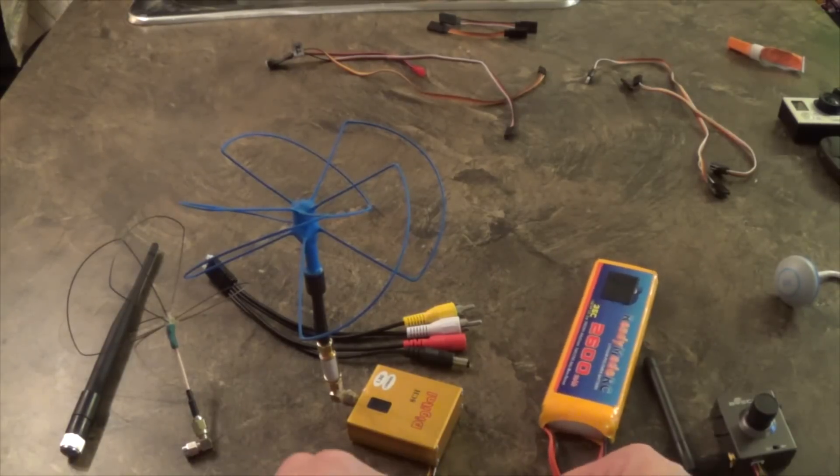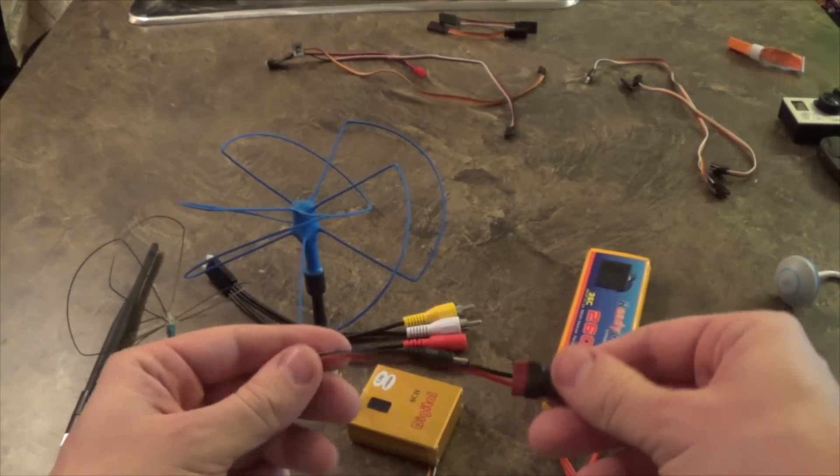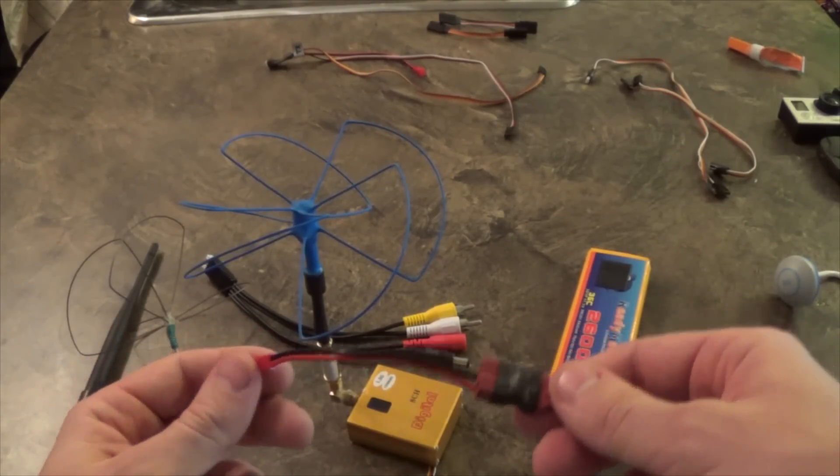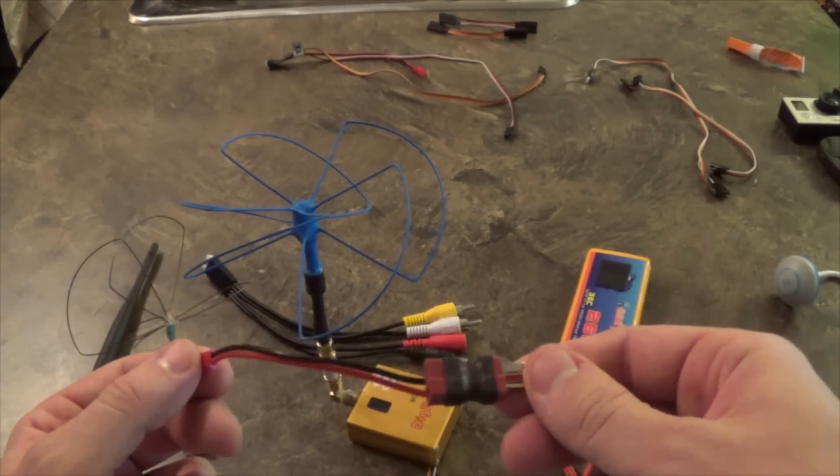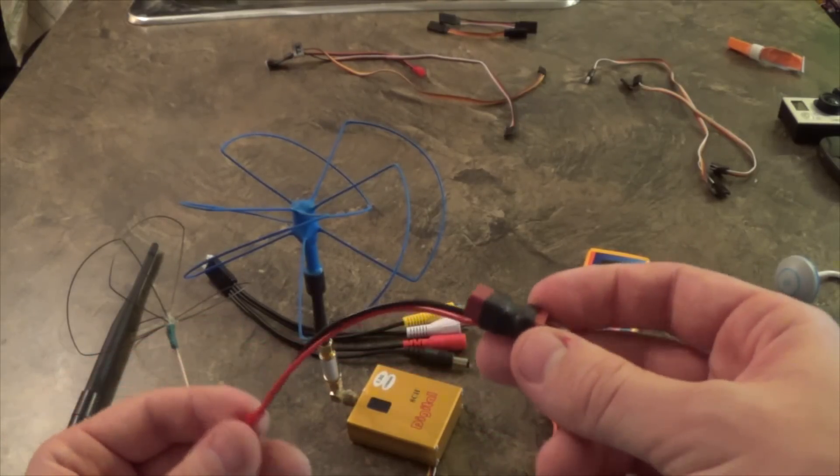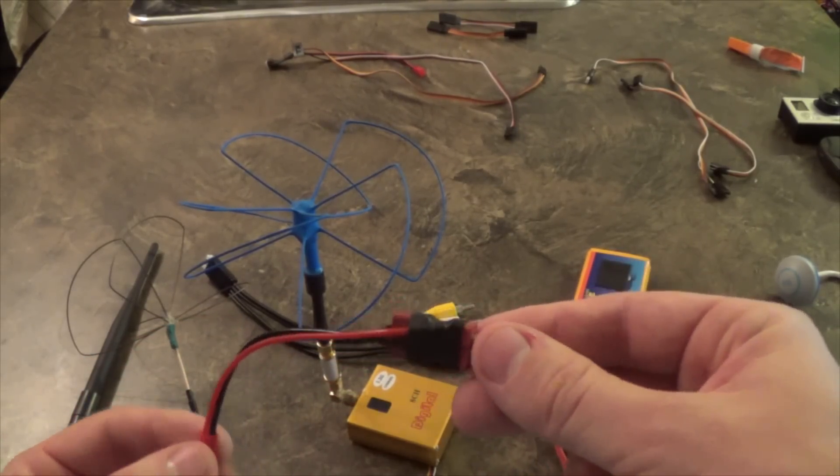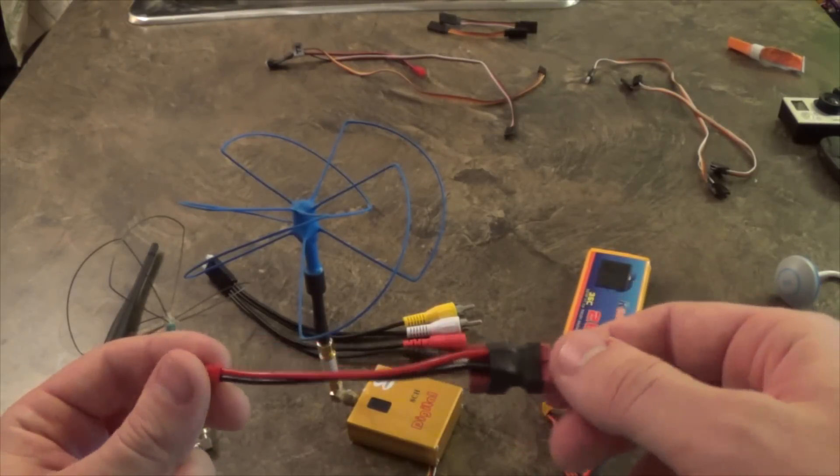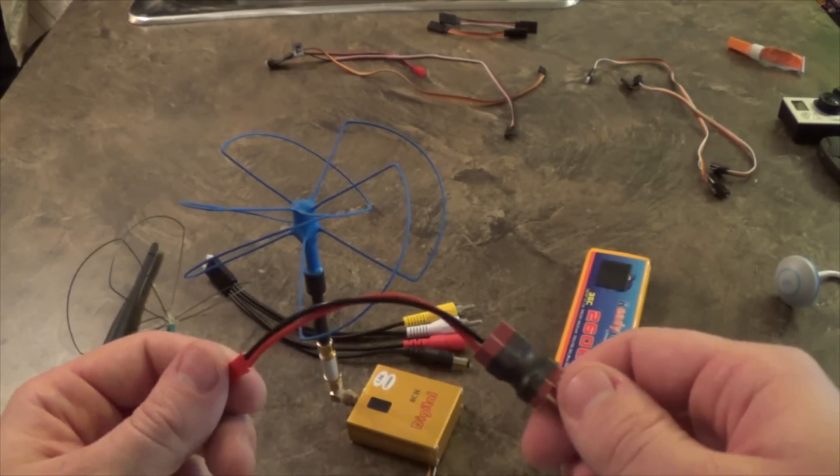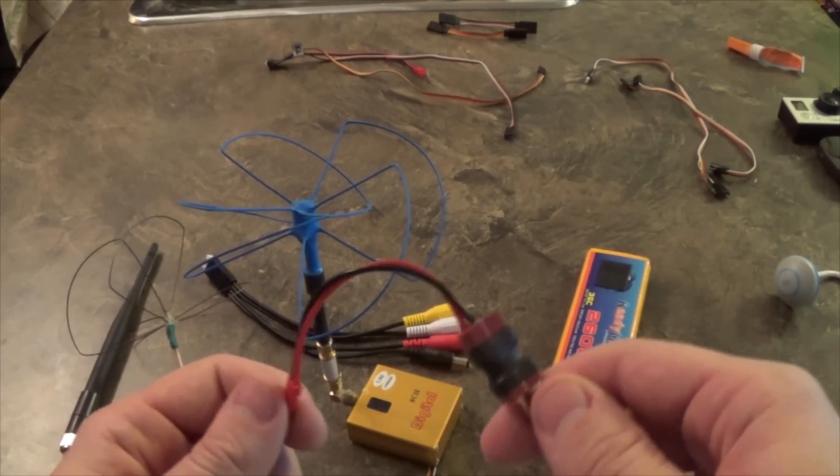What I do is on most systems, if I'm running a three cell on my quadcopter which I usually do, I get this splitter called the T connector splitter. This will allow you to run your FPV system and your quadcopter, RC car, or airplane at the same time so you don't have two batteries.